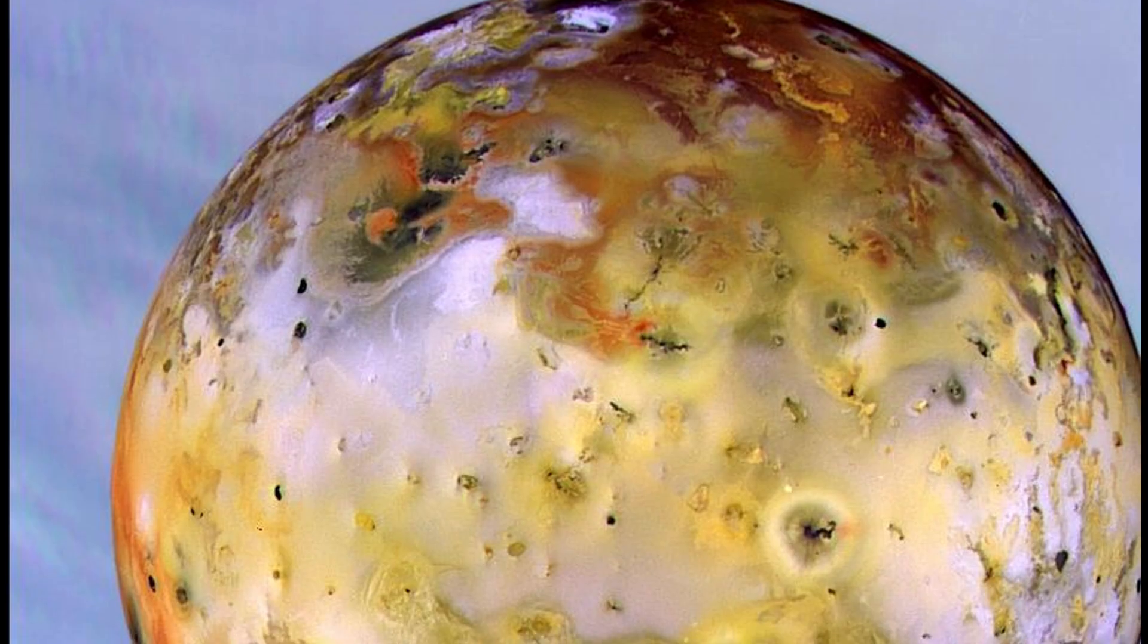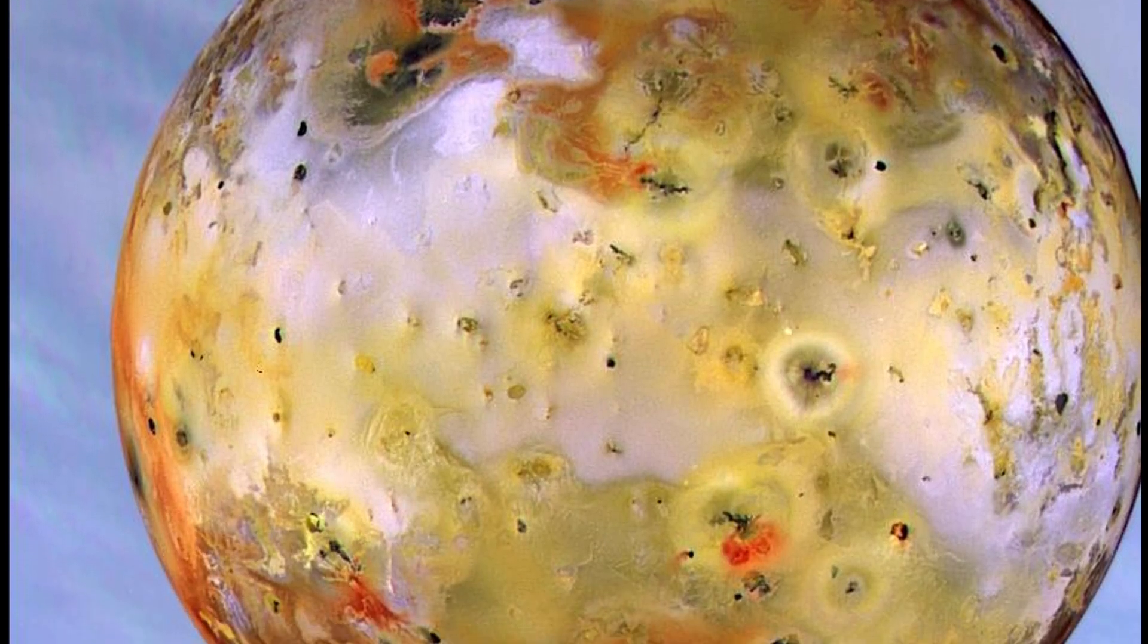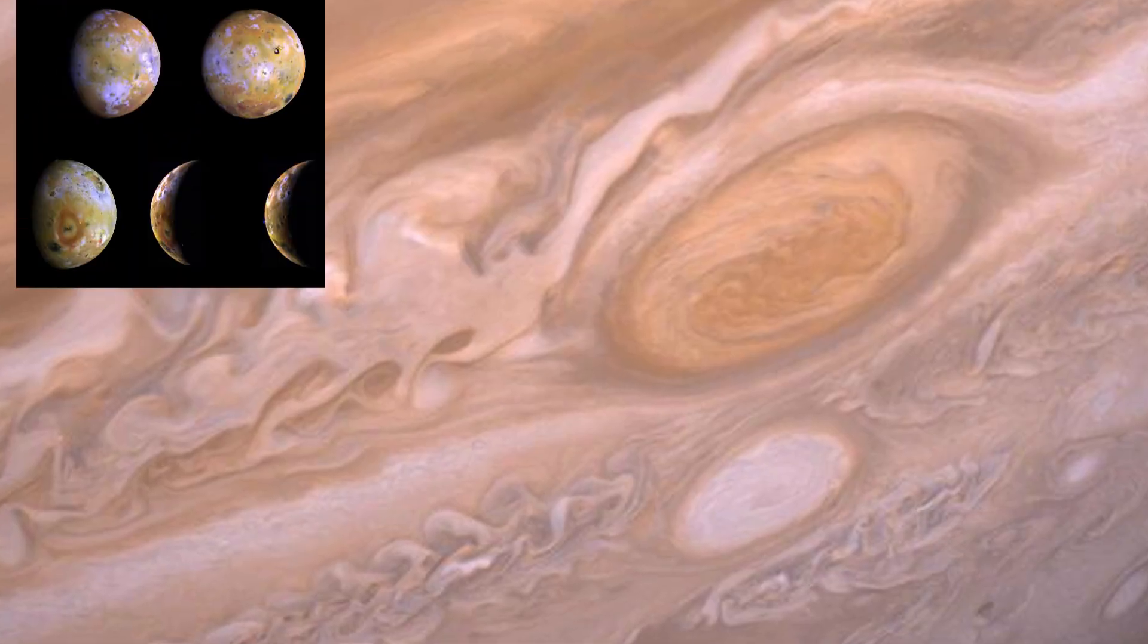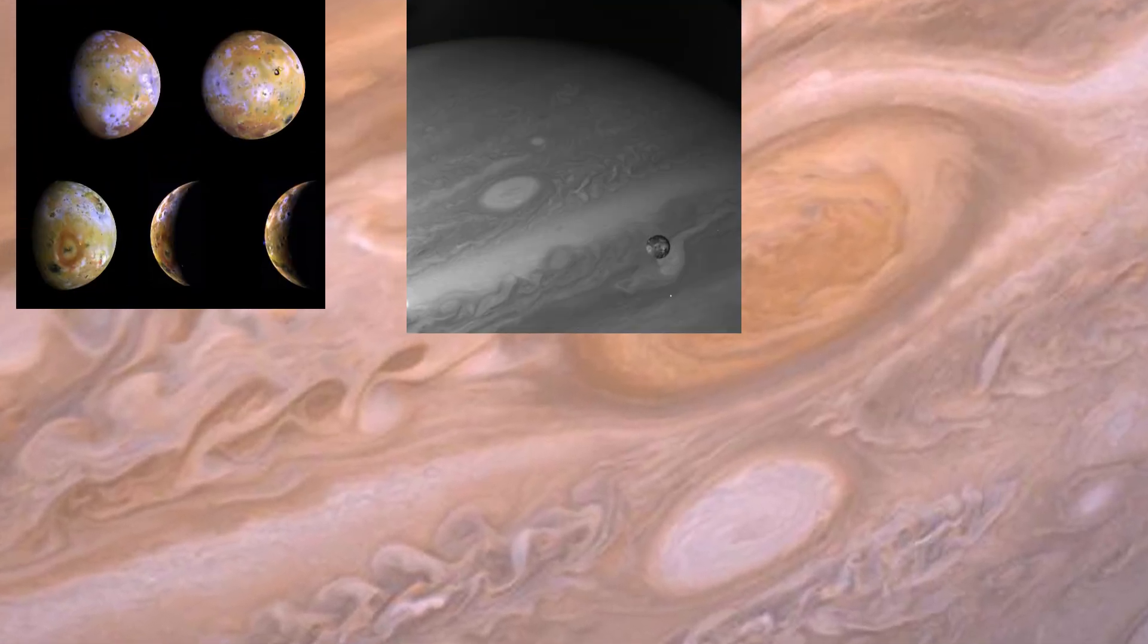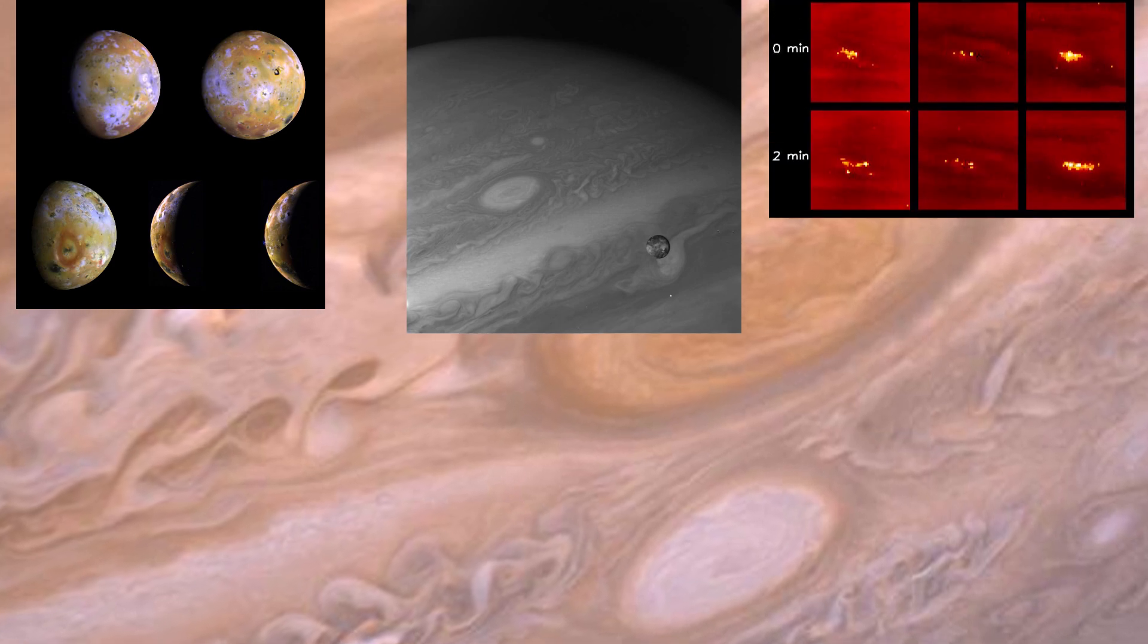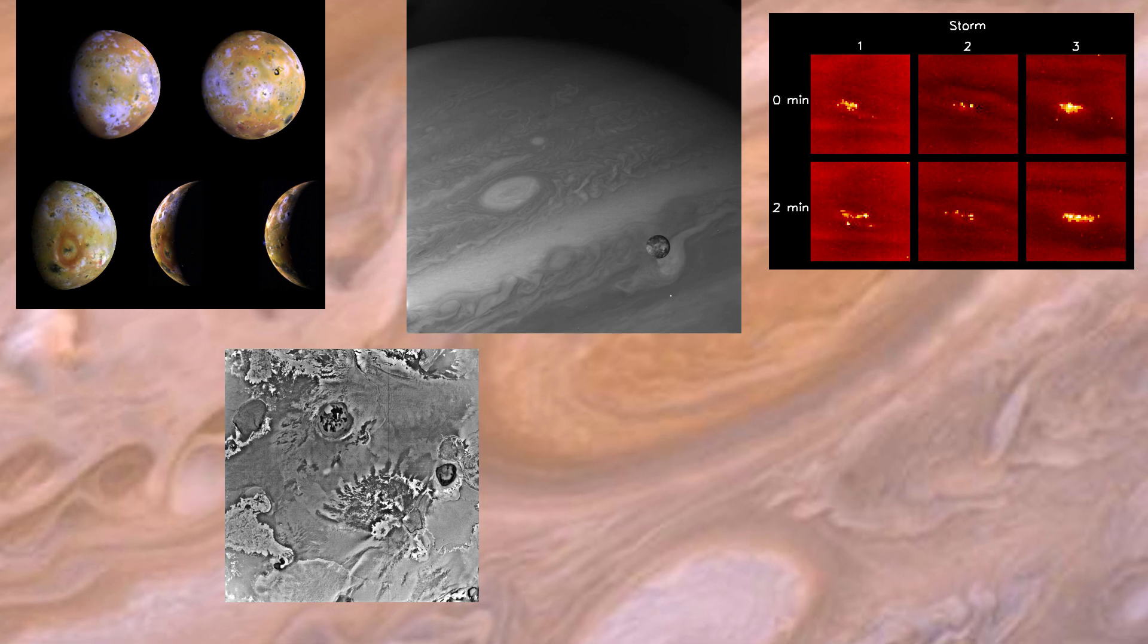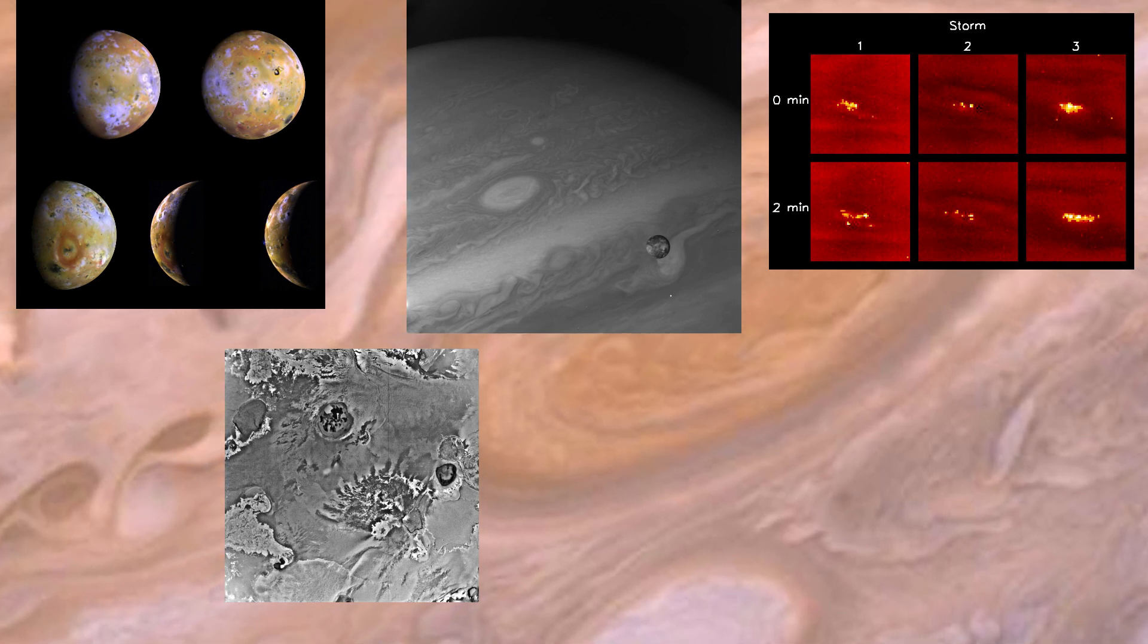It discovered active volcanoes on Io, one of Jupiter's moons, the first time active volcanism had been observed on another world. The images sent back were breathtaking: swirling clouds, intricate ring systems, and moons with surfaces more complex than anyone had imagined. Each photograph was a window into a world completely alien to our own.